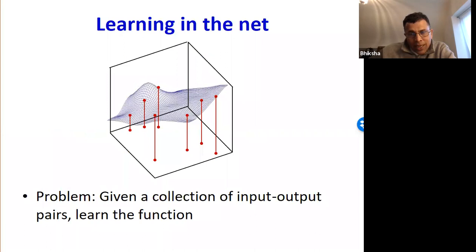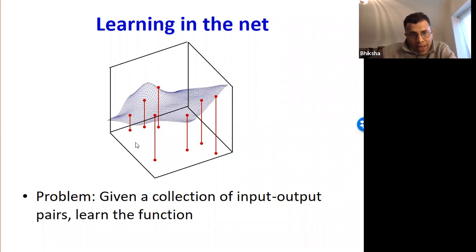Here again is what we meant by learning the network. We want to construct a network to model some function — for example, this bivariate function shown by this mesh. We generally assume the architecture of the model is given, so what we want to do is determine the parameters of the network such that it computes this function as closely as possible. We typically won't have the entire function; instead, we'll only have access to a small number of input-output pairs, which are our training instances.